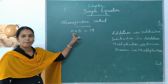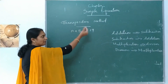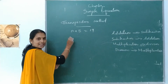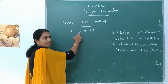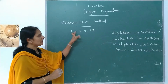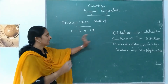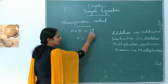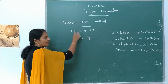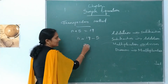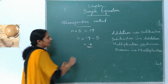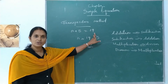Here, LHS is n plus 5. The variable n will stand on the LHS. The constant 5 is transposed to the RHS — positive becomes negative. So n is equal to 19 minus 5, that is equal to 14. Checking: 14 plus 5 is equal to 19. Correct.